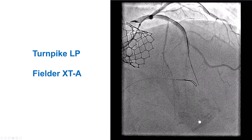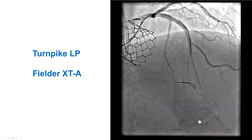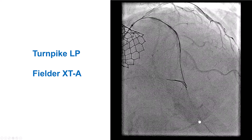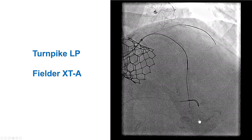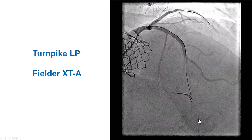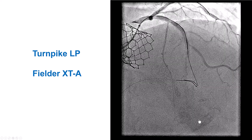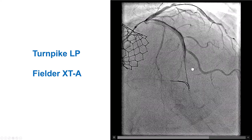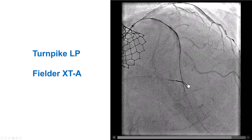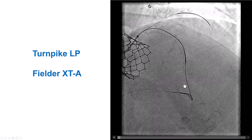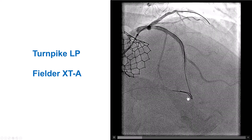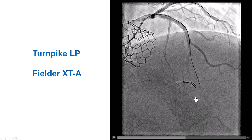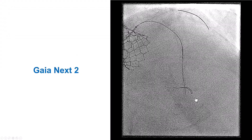Given the favorable characteristics, we decided to start with antegrade wire escalation. We used a Turnpike LP microcatheter along with the Filament XTA, which made some progress but could not be advanced further inside the LAD.